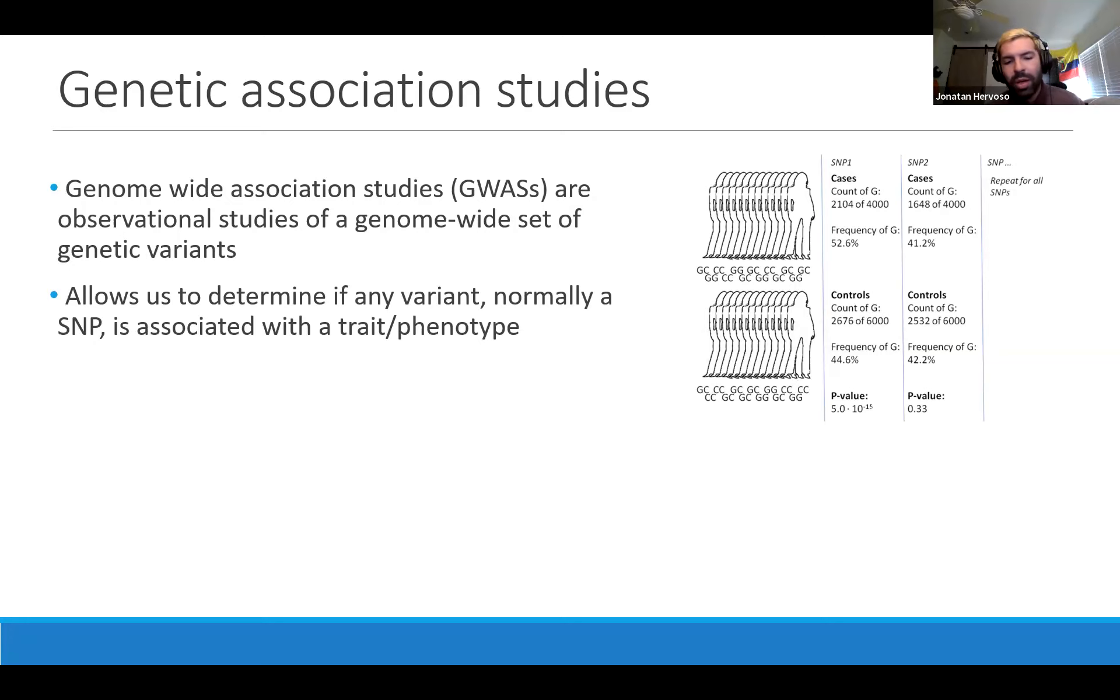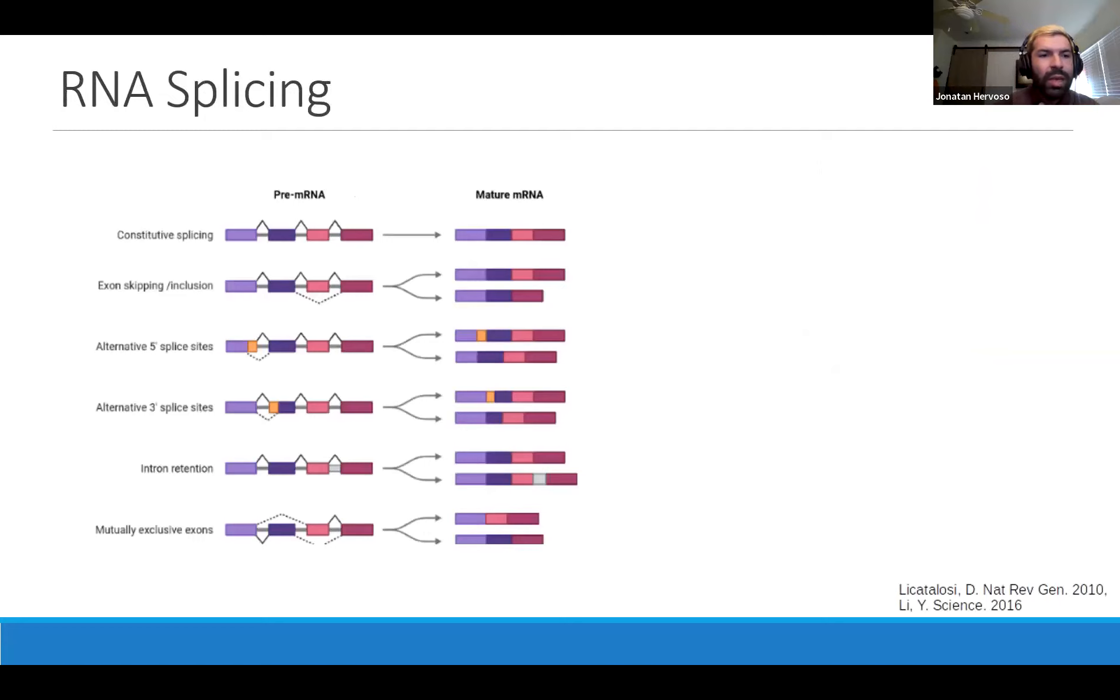All of this is important, but it doesn't really tell us the molecular pathways by which these genetic variants are acting. So one of the ways these genetic variants are acting is through RNA splicing. Traditionally, constitutive RNA splicing is the molecular process of taking out introns from the expression of a gene and joining the exons to create a mature mRNA.